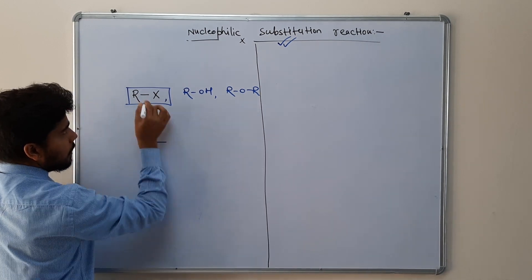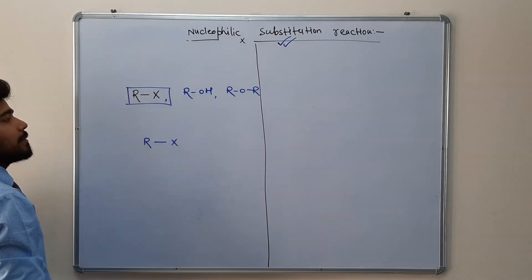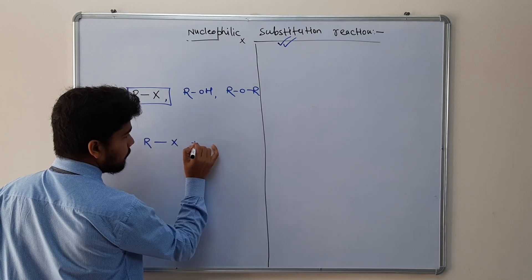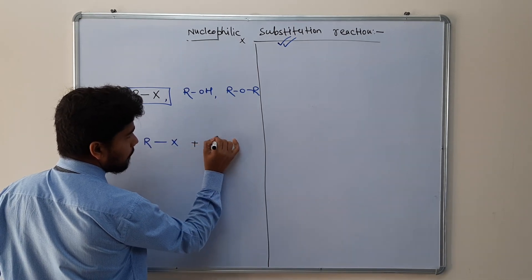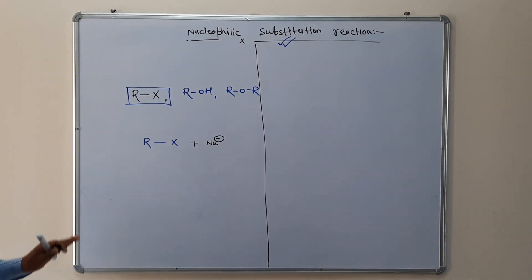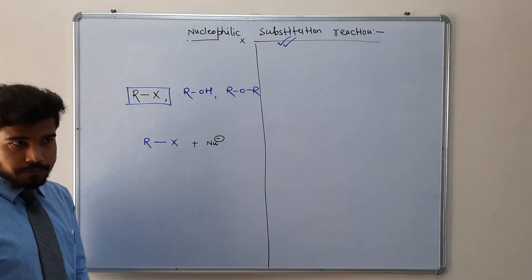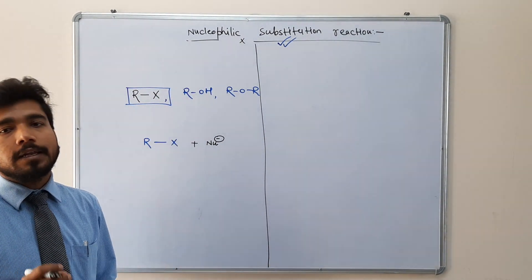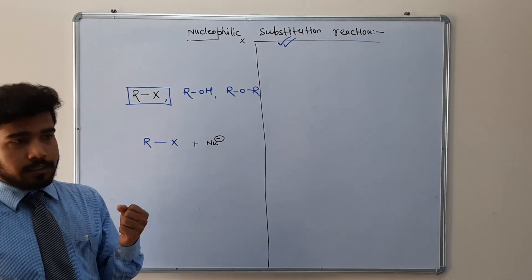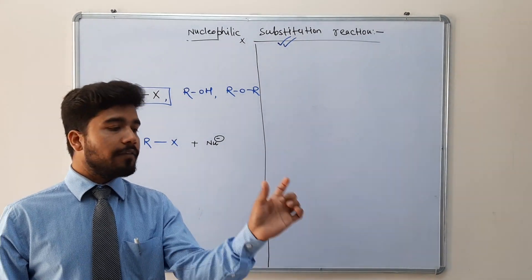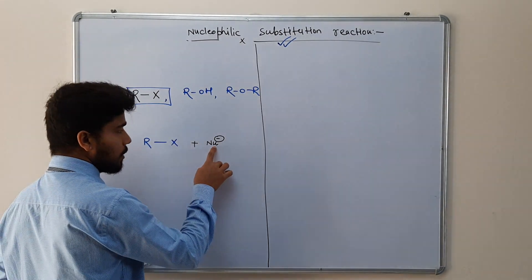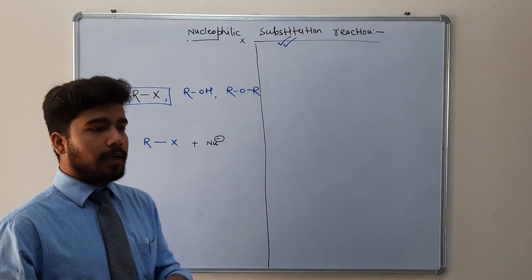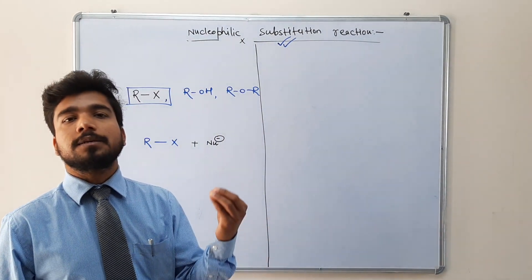So we will take any one of these and start understanding the concept of substitution. Let's say we have a substrate — an alkyl halide — subjected to nucleophilic substitution reaction with a nucleophile. The work of a nucleophile is to attract nucleus. The term nucleophile means nucleus-loving species, so this nucleophile will attract positive charge.